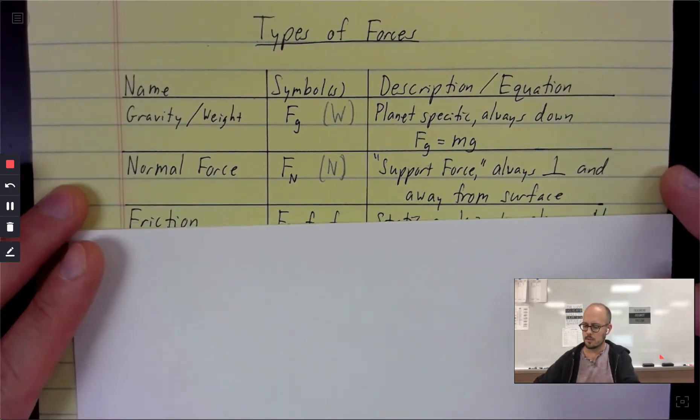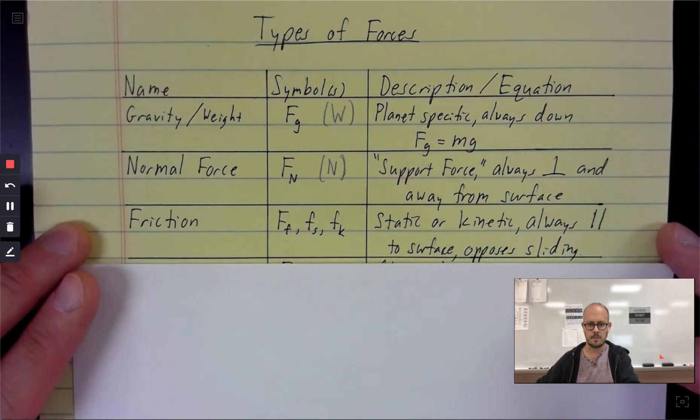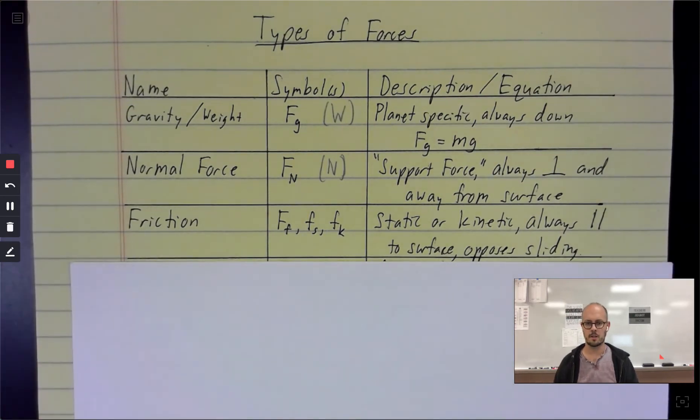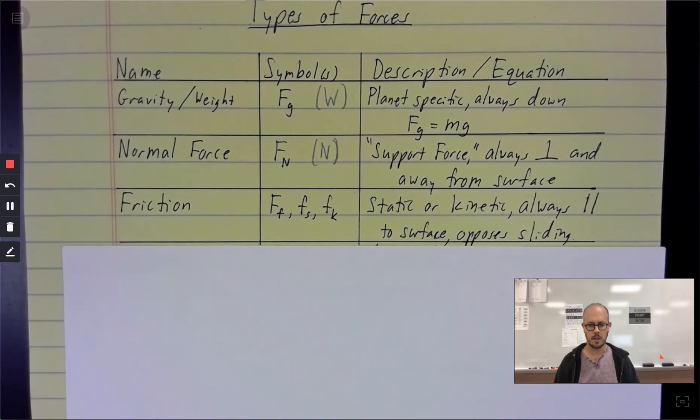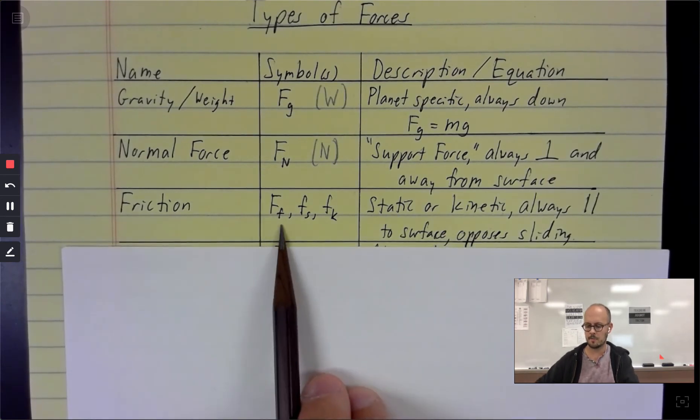So that's the normal force. The other surface force is friction. Friction gets its own part of this unit in dynamics. And it's something that will make your life a little bit complicated for sure. Friction has three symbols. If it's kind of a generic friction, we would use capital F sub lowercase f. So F sub F.